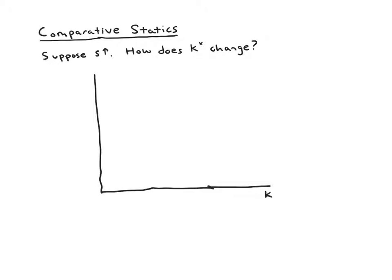Intuitively we would think if people save more, they're going to be able to do more investment, all else equal, and that should lead to accumulating more capital. So the answer we get with this graph should be: as s goes up, the steady state capital k* goes up. Let's see if we can show that with the diagram.